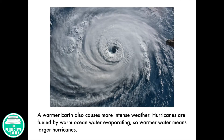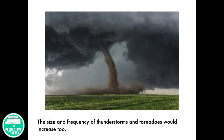A warmer Earth also causes more intense weather. Hurricanes are fueled by warm ocean water evaporating, so warmer water means larger hurricanes. The size and frequency of thunderstorms and tornadoes would increase, too.